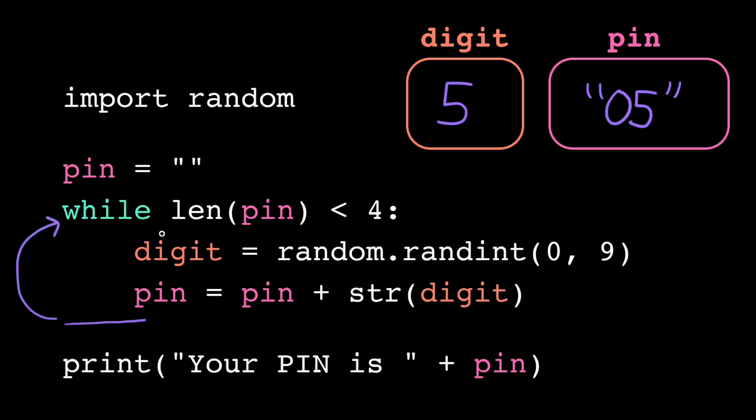We jump back to the top of the loop, and we check the loop condition for the third time. Pin now contains the value 0 5, so its length is 2. 2 is less than 4, so the loop condition is true. So we're entering the loop body again.